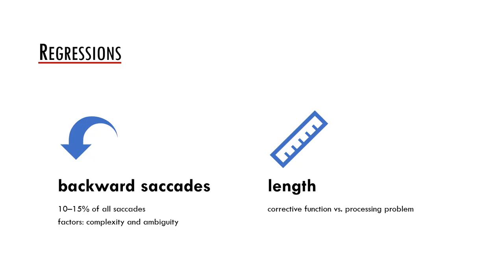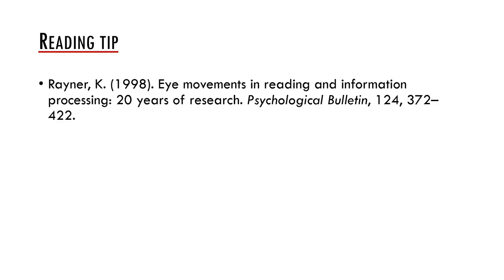Certain regressions may have only a corrective function, especially when the previous forward saccade was too long. These corrective regressions tend to be short. However, longer regressions serve as evidence of certain processing problems. We will return to this topic in the next presentation.